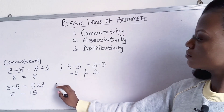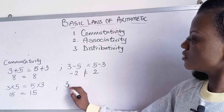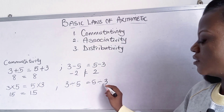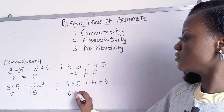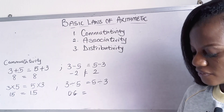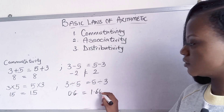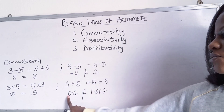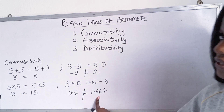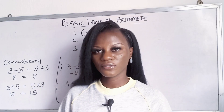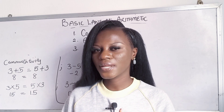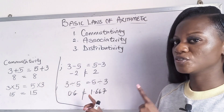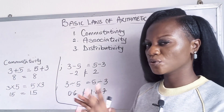Let's try division. 3 divided by 5 — is it the same as 5 divided by 3? Let's use a calculator. 3 divided by 5 is 0.6, and 5 divided by 3 is 1.667. So 0.6 is not the same as 1.667. This tells us that commutativity only applies for the addition and multiplication operations — it doesn't apply for division and subtraction.